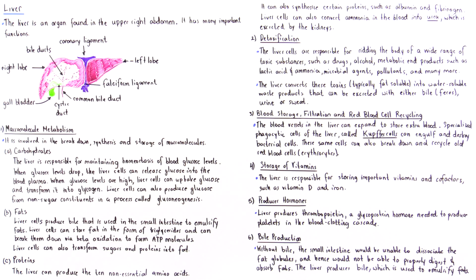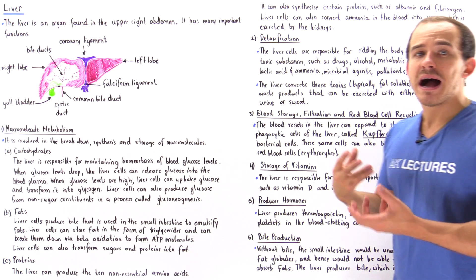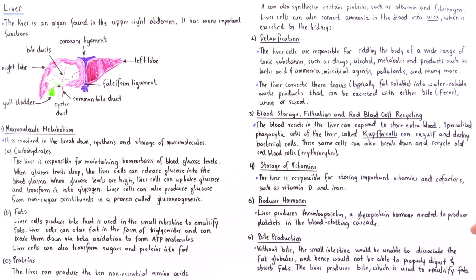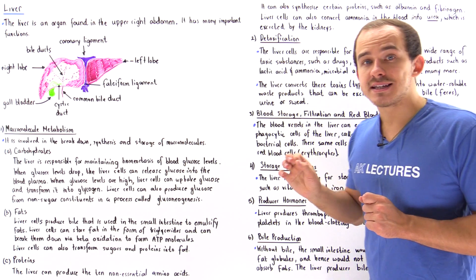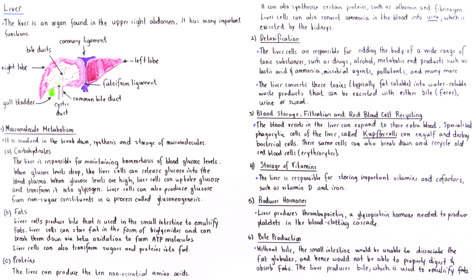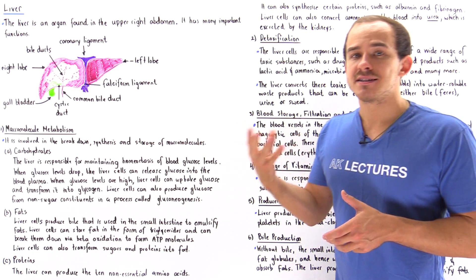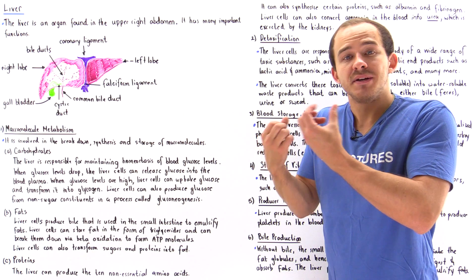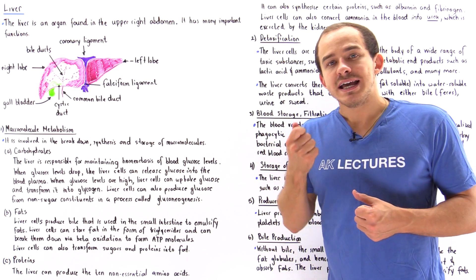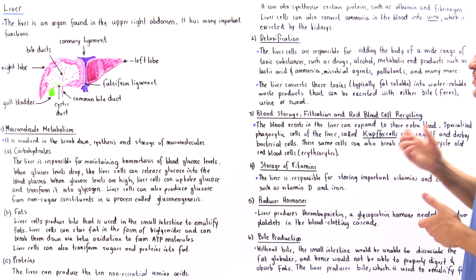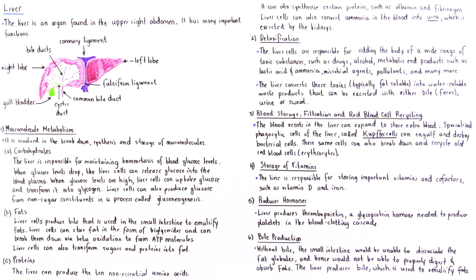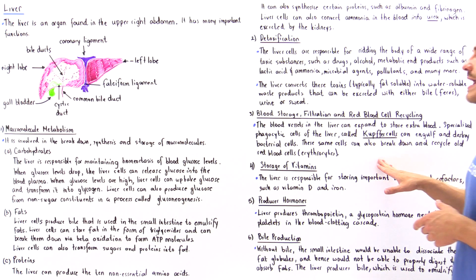The blood vessels in the liver can expand to store extra blood that might be needed by the body in the future. Specialized phagocytic cells inside the liver known as Kupffer cells are responsible for phagocytizing, engulfing, and breaking down infectious bacterial cells found inside our blood plasma and liver.